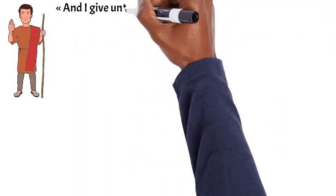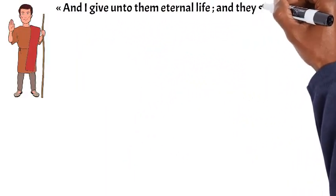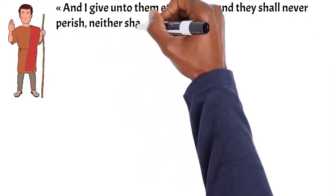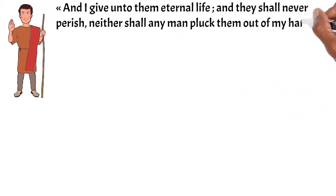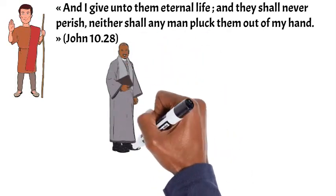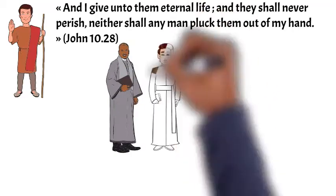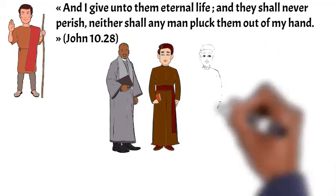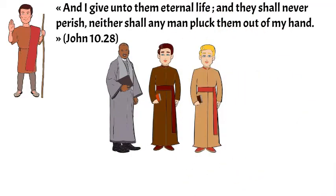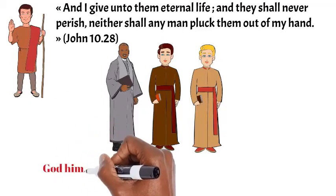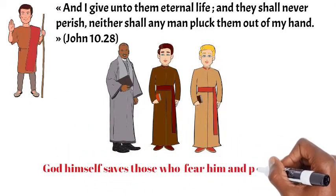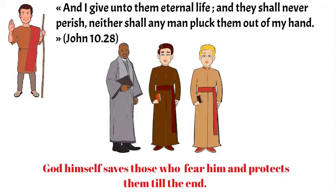Jesus says, and I give unto them eternal life, and they shall never perish, neither shall any man pluck them out of my hand. Jesus said so to the Pharisees to let them understand that it's himself who will save his disciples and protect their work in justice and truth till the end. God himself saves those who fear him and protects them till the end.